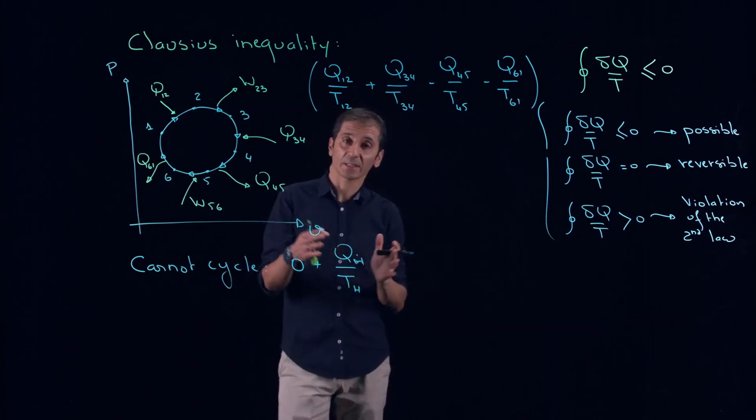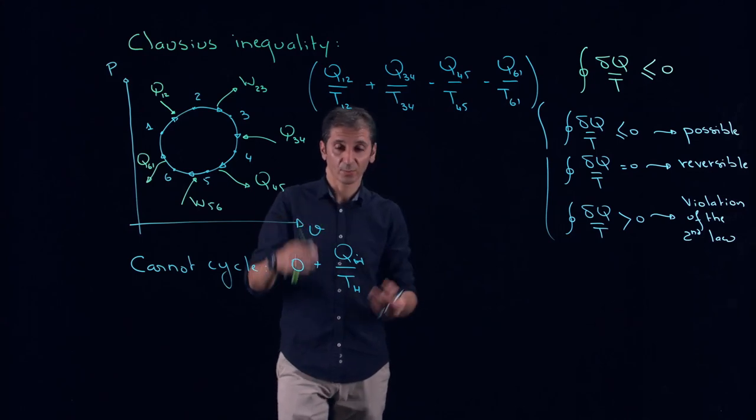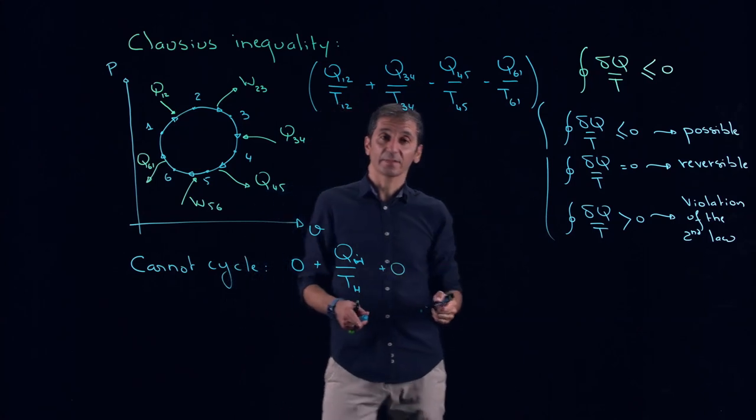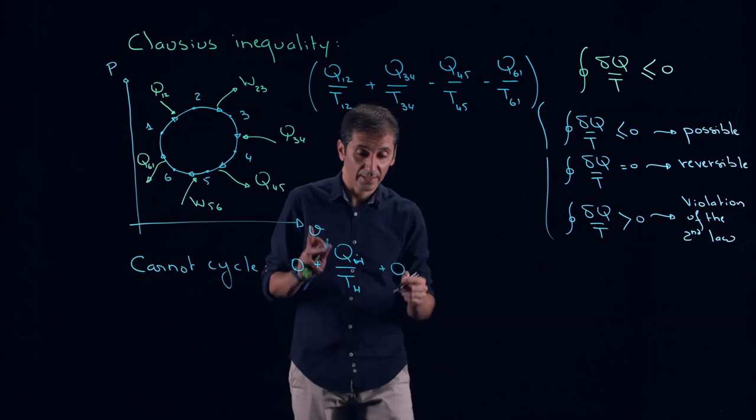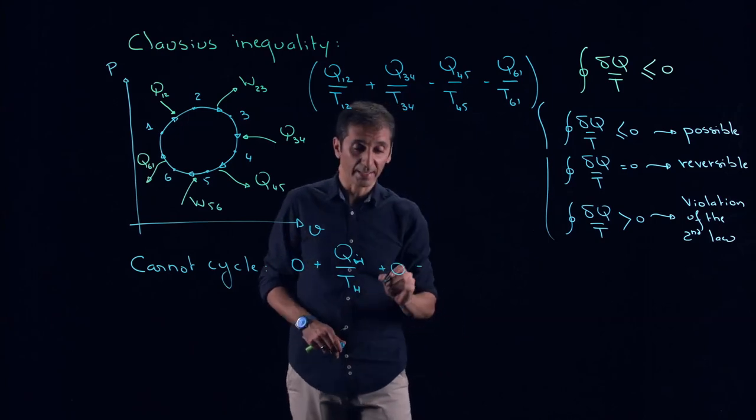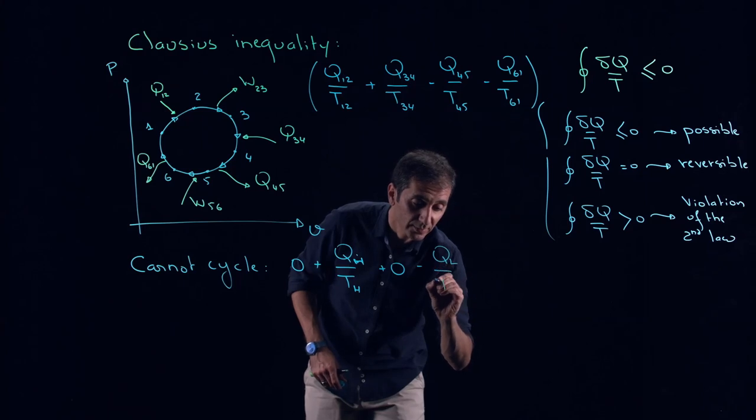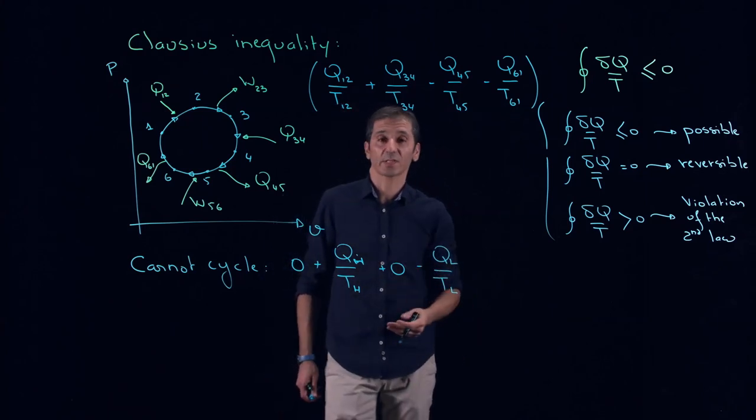Then what we have, we have adiabatic expansion. It's adiabatic again. Q is equal to zero. And the last one is isothermal heat rejection. It's heat rejection, so we have to put minus. QL and rejected to a reservoir, TL. So this is what Carnot cycle is giving us.